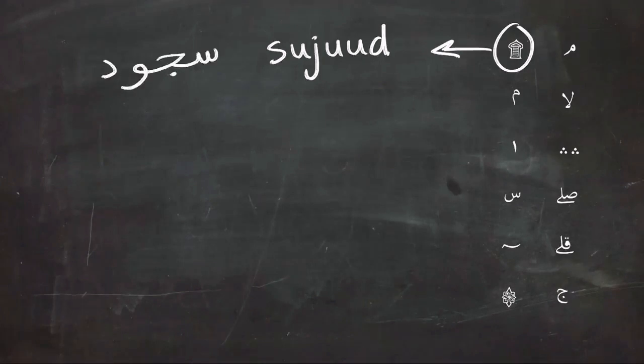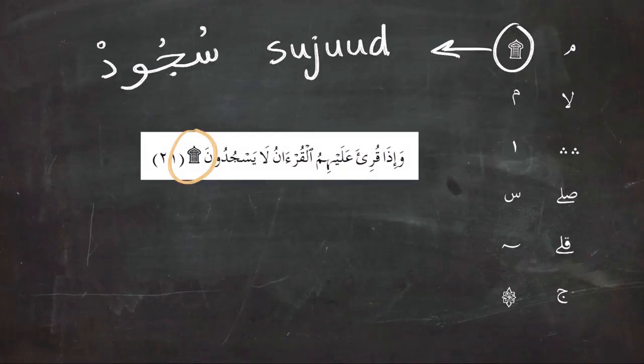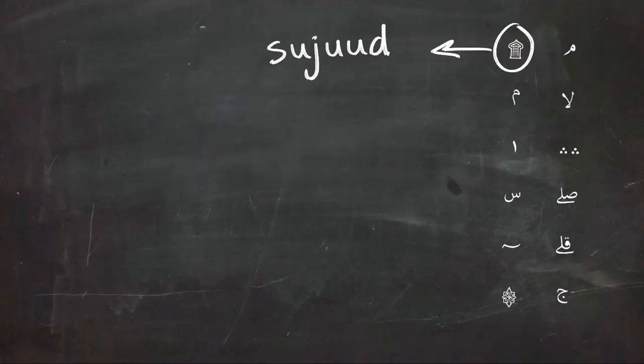In total there are 15 of this sign, and each time you see it and after you read the verse, you have to do sujud. So after reading the ayah, you will prostrate for God.